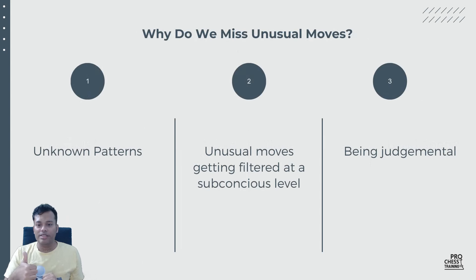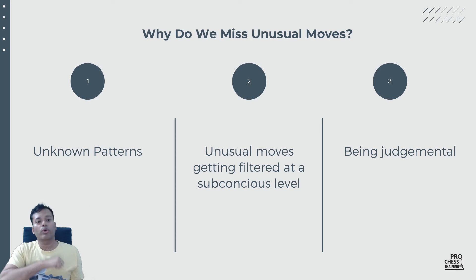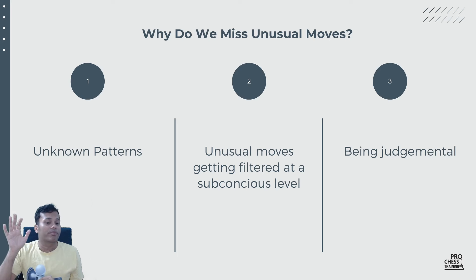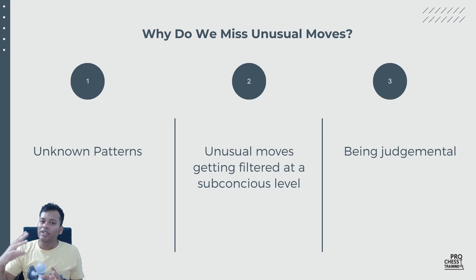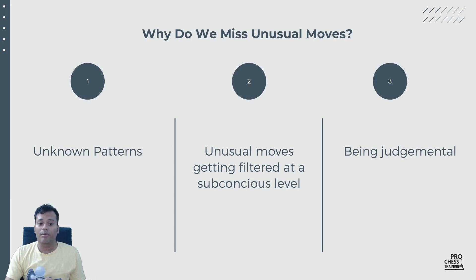Why do we miss unusual moves? This will be the sixth chapter. Unknown patterns — patterns we have not seen — and also some moves get filtered at a subconscious level. For example: 'He's not going to play knight a1,' or 'he's not going to give his good bishop for my bad bishop.' We don't look at these moves. Being judgmental — 'he's not going to push his pawn and weaken his king' — our fine sense of understanding can act as a hindrance, and that could also result in blunders.